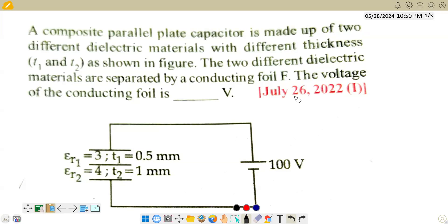Hello students, the question says, a composite parallel plate capacitor is made up of two different dielectric materials with different thickness t1 and t2 as shown in the figure.